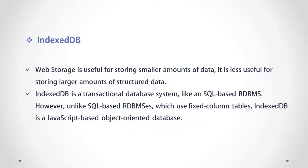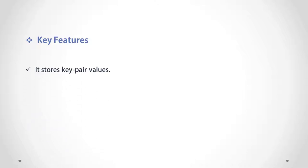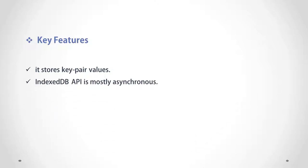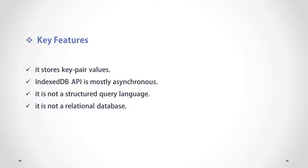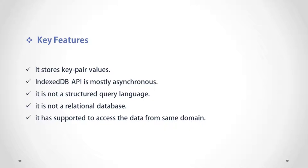The features of IndexedDB are as follows: it stores values in key-value pairs. The IndexedDB API is mostly asynchronous. It is not a structured query language. IndexedDB is not a relational database. It supports access to data from the same domain only — so only a single domain can access all data stored in the IndexedDB database.